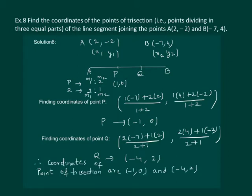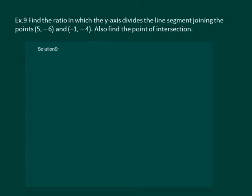So the coordinates of point Q are (-4, 2). Now for the next problem with points (5, -6) and (-1, -4), we also need to find the point of intersection with the y-axis. The ratio is not given to us, and we know that the point lies on the y-axis. Let us assume the ratio to be k:1.